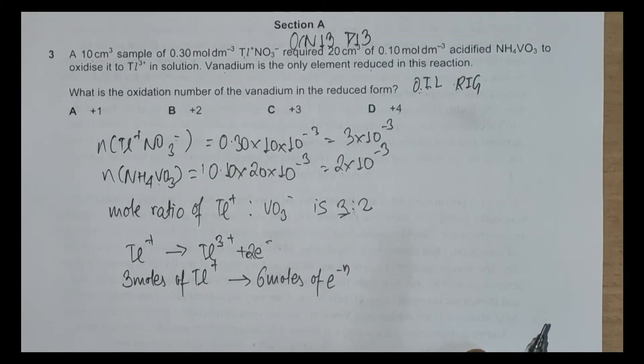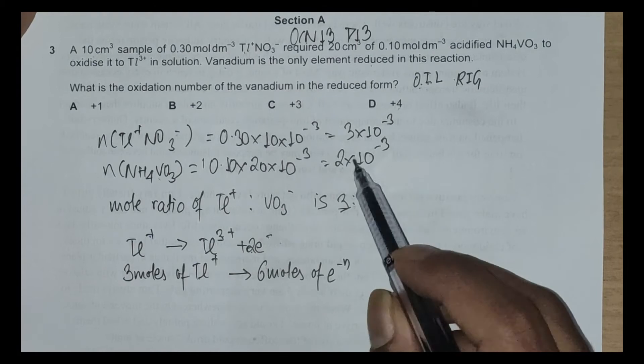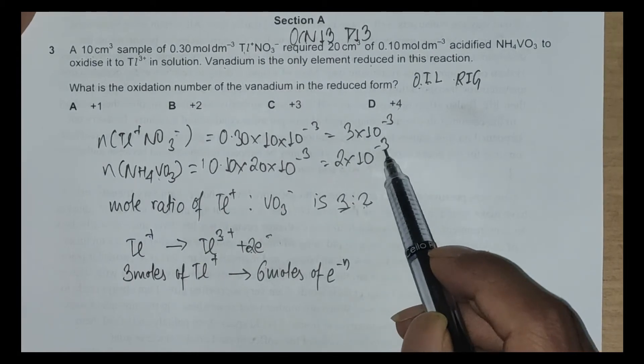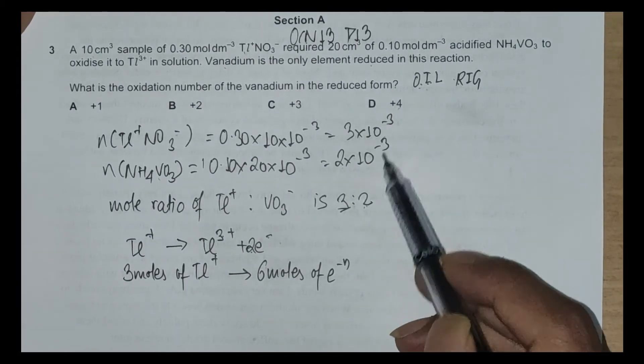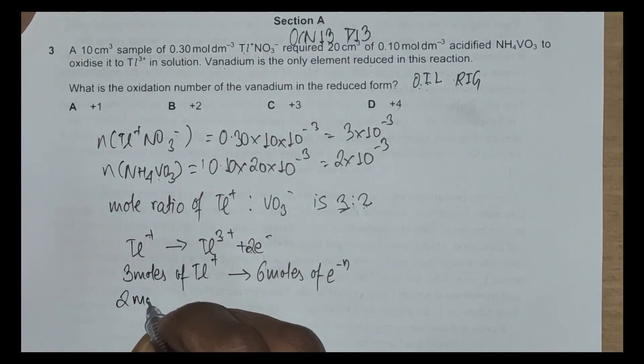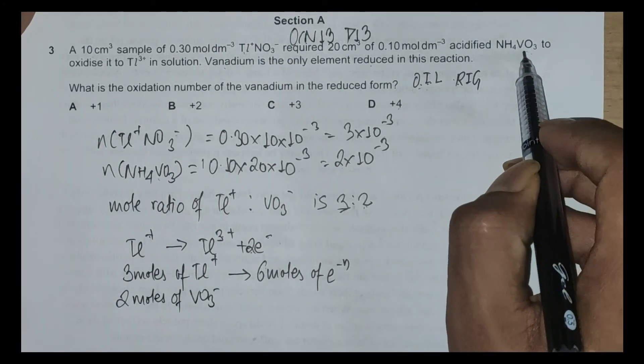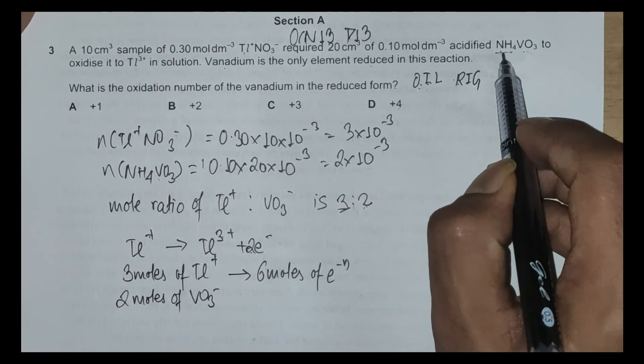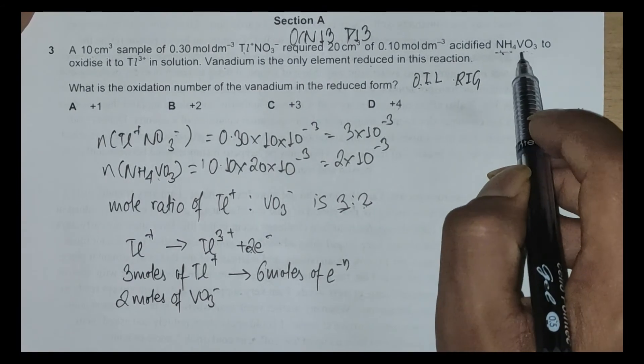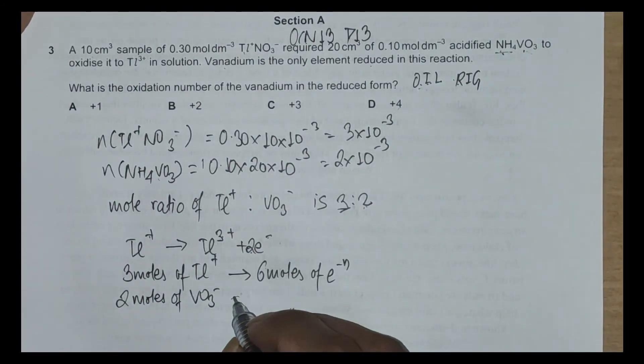Now what we can write next is we have 2 moles of vanadium. Actually it's 2×10⁻³ but we removed both the 10⁻³'s, and we have 2 moles of VO₃⁻. Because NH is NH₄⁺, to form a compound we need to have VO₃⁻. So 2 moles of VO₃⁻